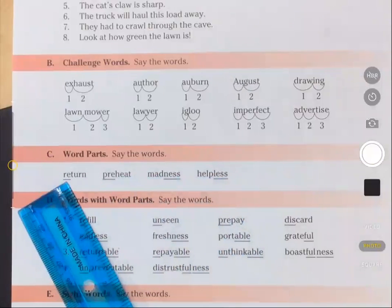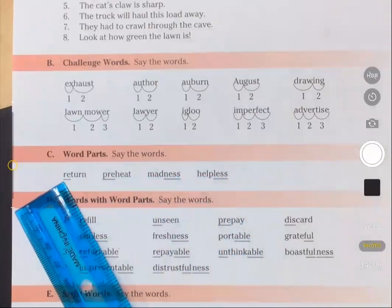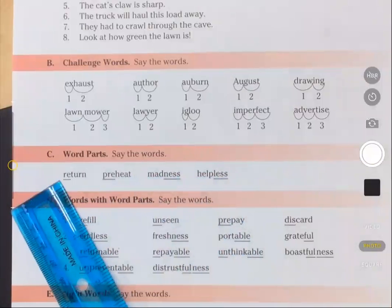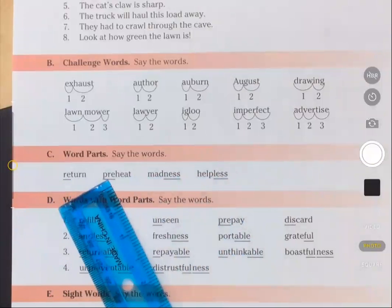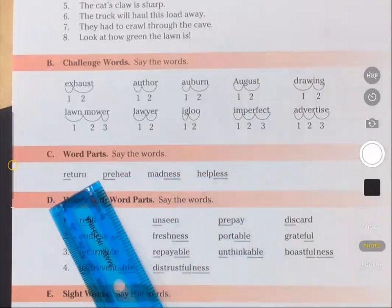The underlined letters are r-e. The sound is re. The word is return. The underlined letters are p-r-e. The sound is pre. The word is preheat.